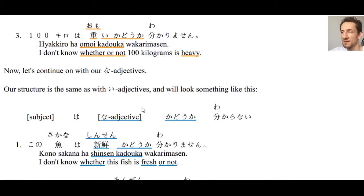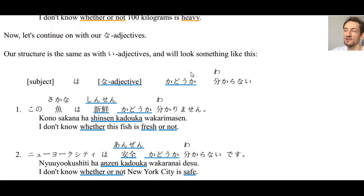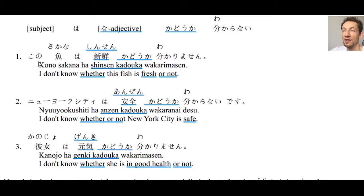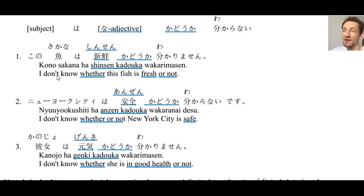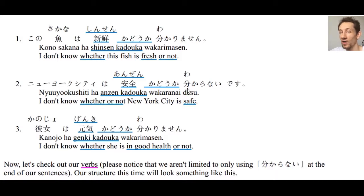Now let's look at な-adjectives. It works the exact same way — we just append かどうか. Number one: この魚はシンセンかどうかわかりません — I don't know whether this fish is fresh (シンセン) or not. Number two: ニューヨークシティは安全かどうかわからないです — I don't know whether or not New York City is safe.